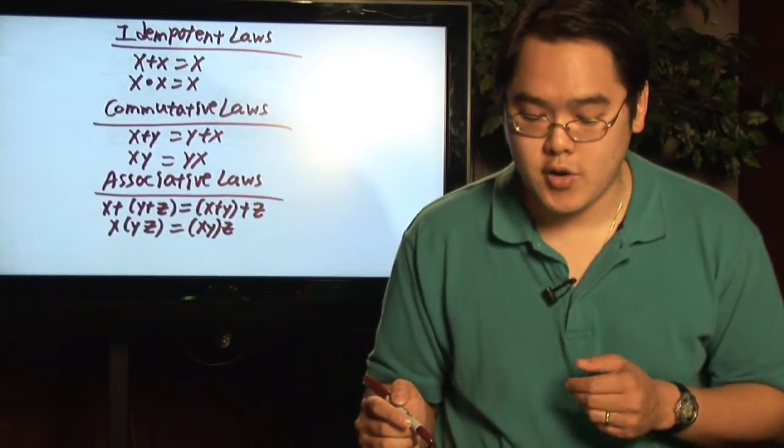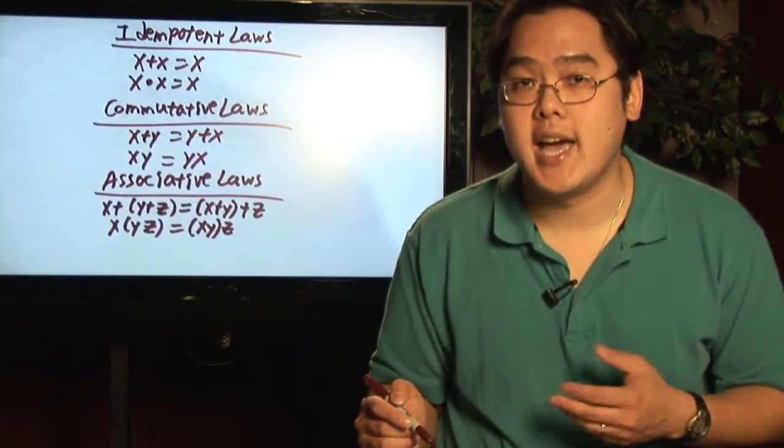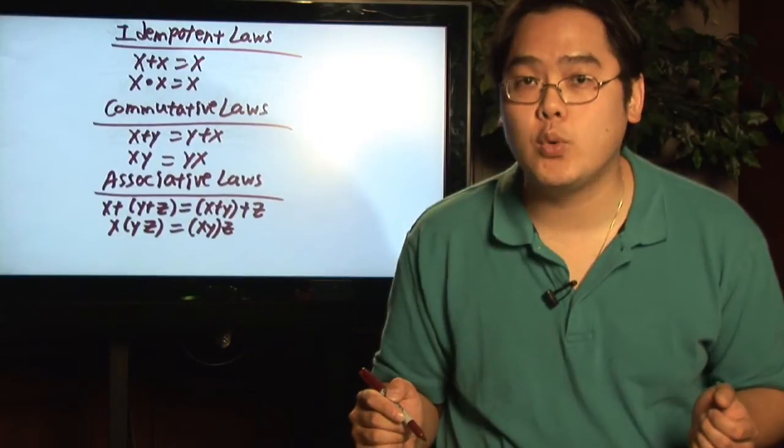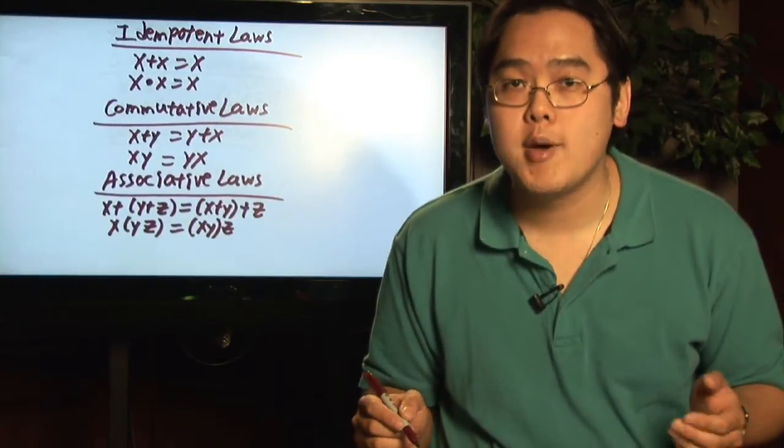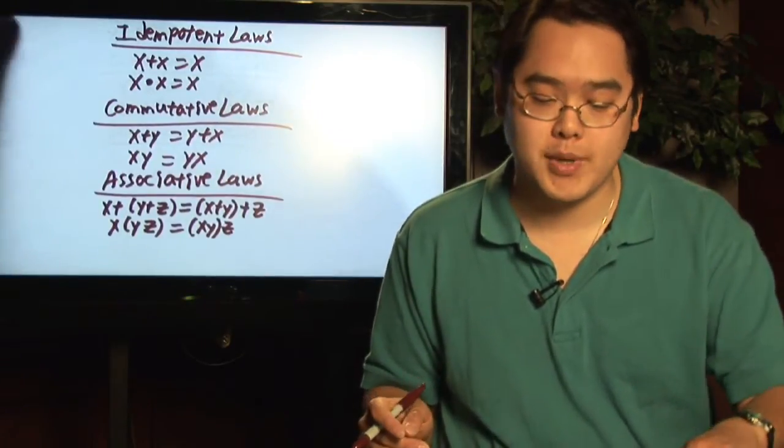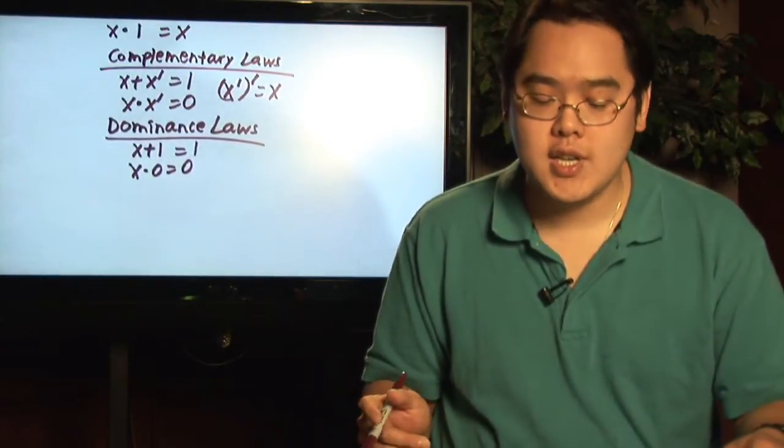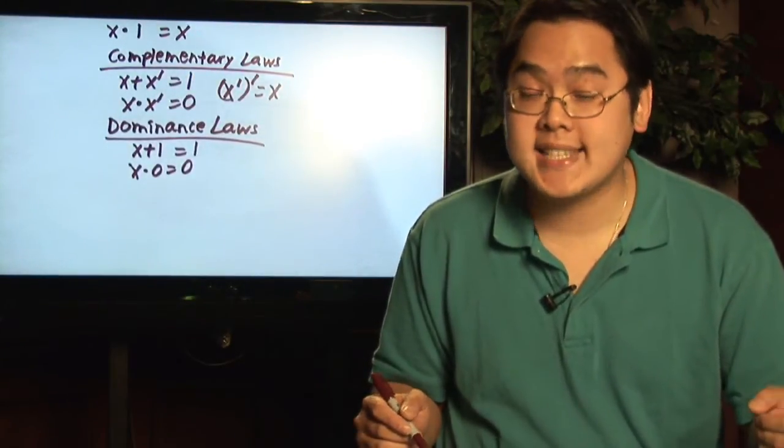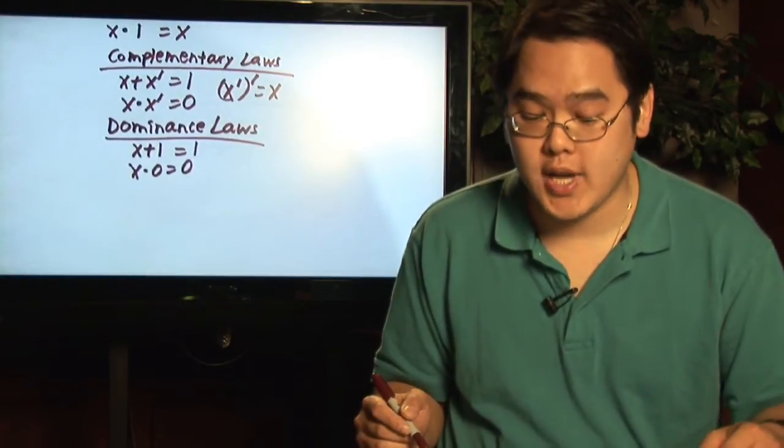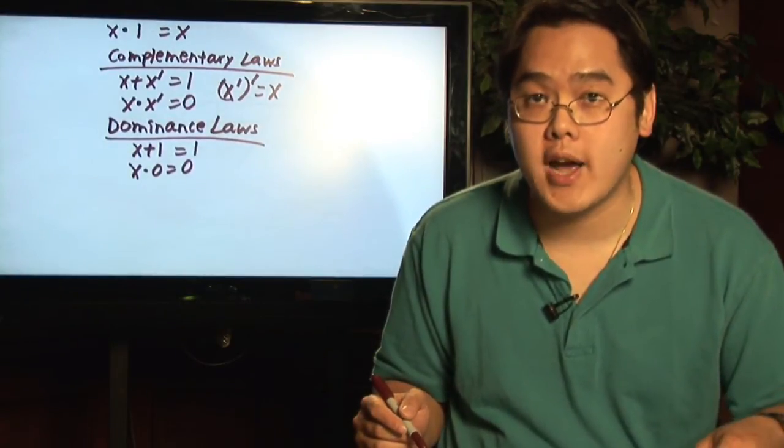The associative laws are the same idea: x plus parentheses y plus z equals parentheses x plus y plus z, and the same goes with multiplication. We also have the identity laws: x plus zero is equal to x, x times one is equal to x. Again, pretty straightforward as in regular algebra.